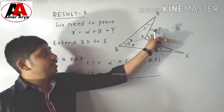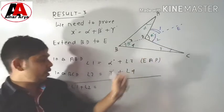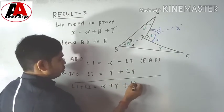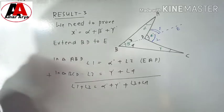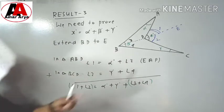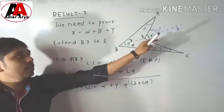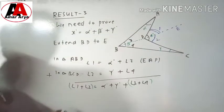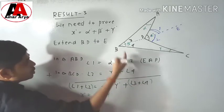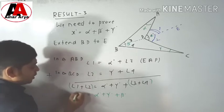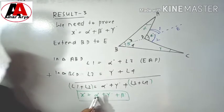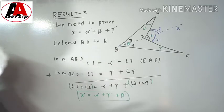When we add angle 1 plus angle 2, that gives us X. We have alpha, gamma, alpha, gamma, and angle 3 plus angle 4. Angle 1 plus angle 2 equals X degrees. Alpha plus gamma, and angle 3 plus angle 4 equals beta. So X equals alpha plus beta plus gamma — that is the very important result and you should keep it in mind. You have to prove X equals alpha plus beta plus gamma.